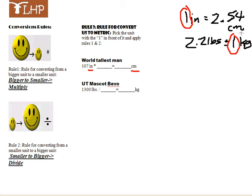What do we multiply by? We multiply by the amount of centimeters in one inch. So if we go 107 inches times 2.54, it should give us approximately 272 centimeters.